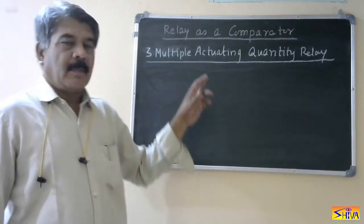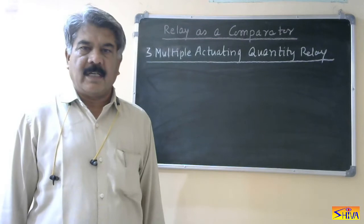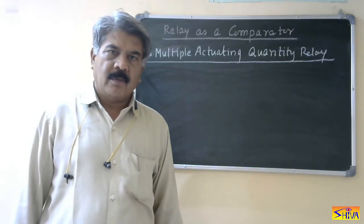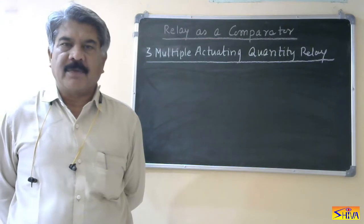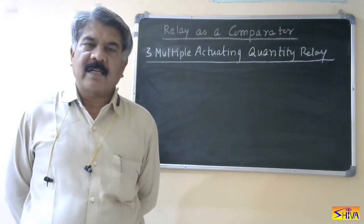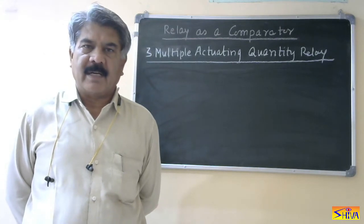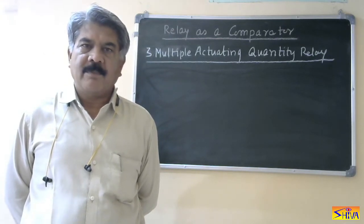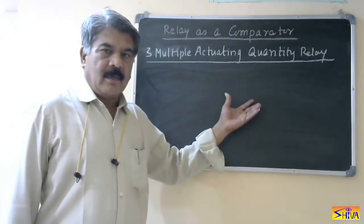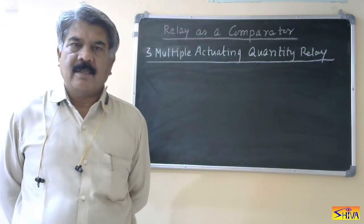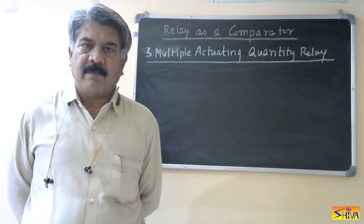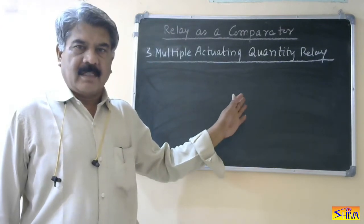Next is the multiple actuating quantity relay, or multiple actuating quantity comparator. As the name indicates, the number of actuating quantities is more than two. In power systems, sometimes we need non-conventional characteristics like quadrilateral, trapezoidal, elliptical, and so on. These characteristics cannot be generated by a double actuating quantity comparator. So we need more than two quantities — these non-conventional characteristics can be generated by more than two actuating quantities relays.